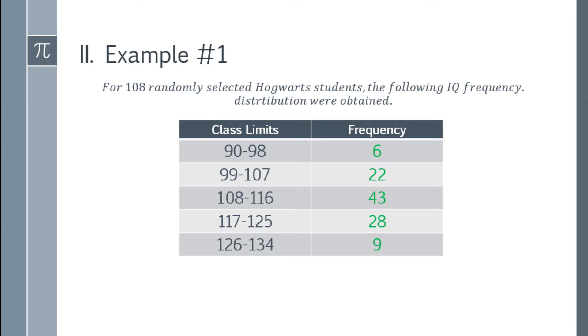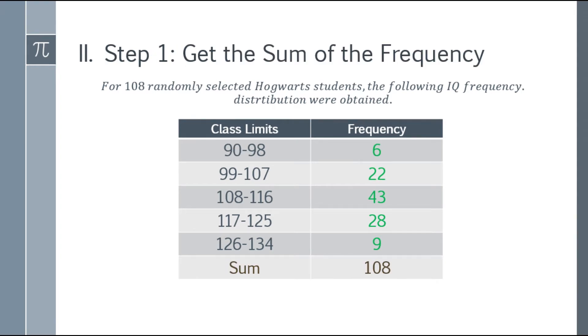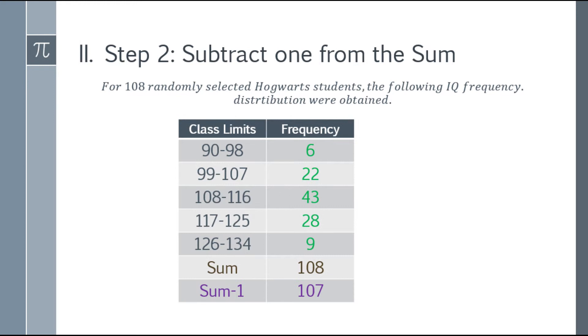We'll do this step by step. Let's go to step 1: Get the sum of the frequency. Add 6 plus 22 plus 43 plus 28 plus 9, and that will be 108. Next, you have to subtract 1 from the sum. We'll set this aside for now; we'll use it later. So 108 minus 1 is 107.